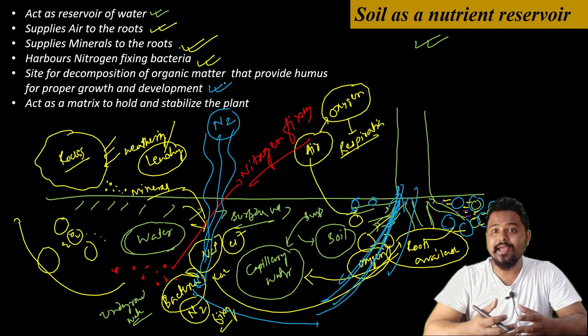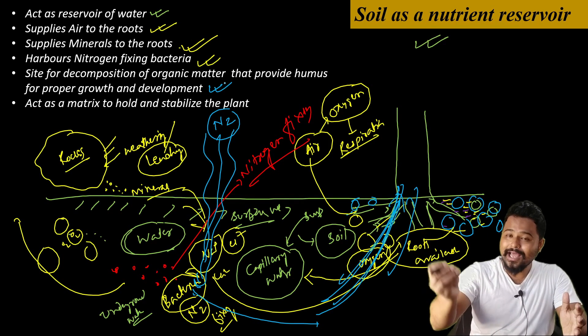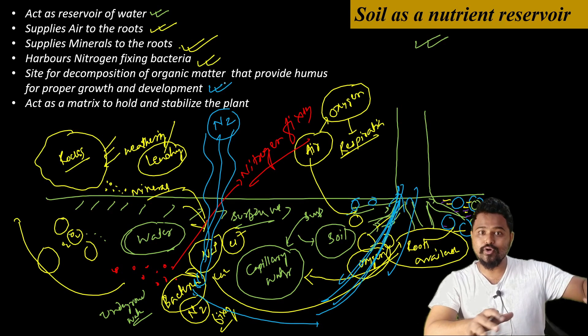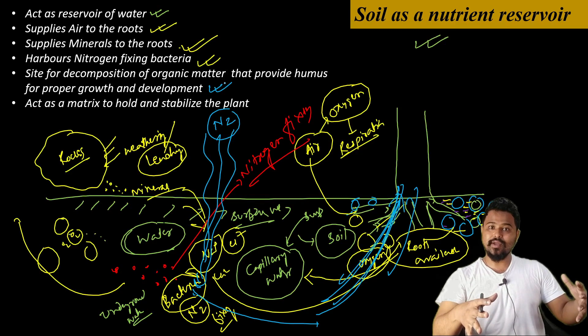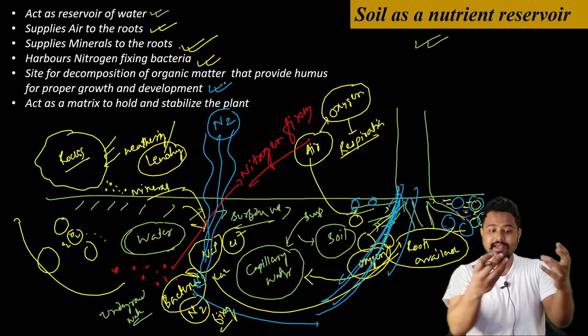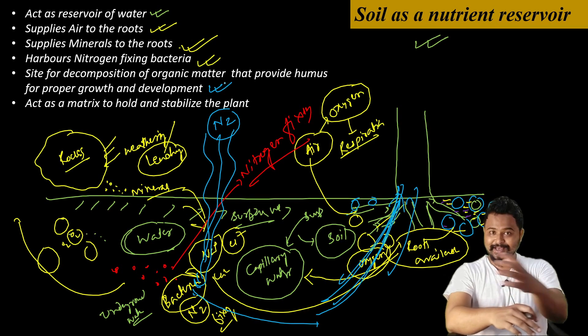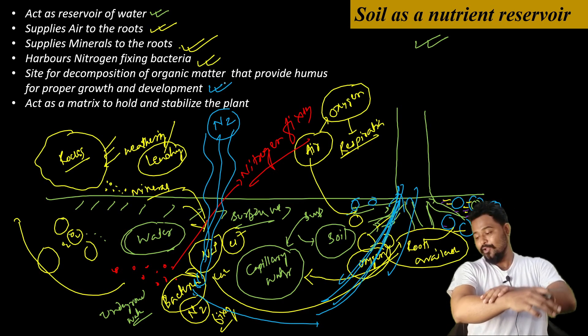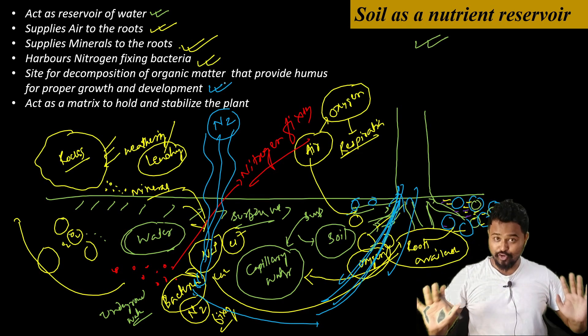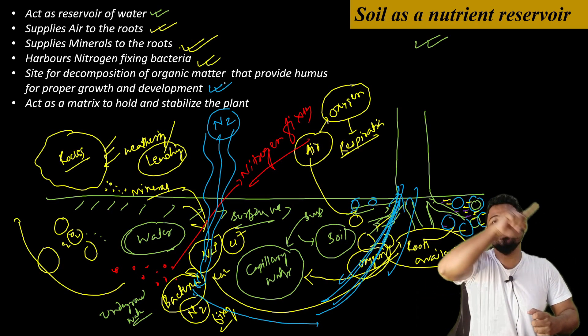This is what we call humus. Old leaves, grass, animal waste, manure - we collect these and make compost. When things decompose, they contain nutrients - nitrogen, phosphorus, potassium. Finally, when we die and decay, where do we mix? We mix with the soil. In this soil, these nutrients are added.